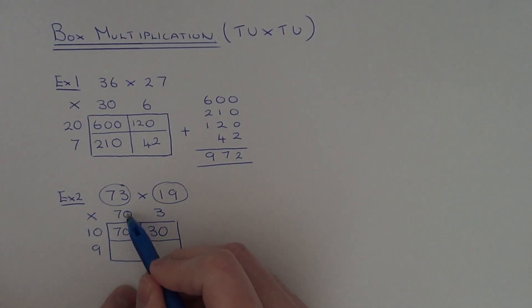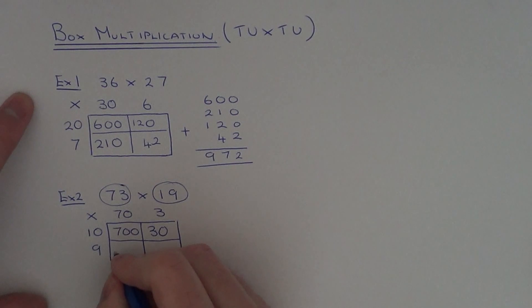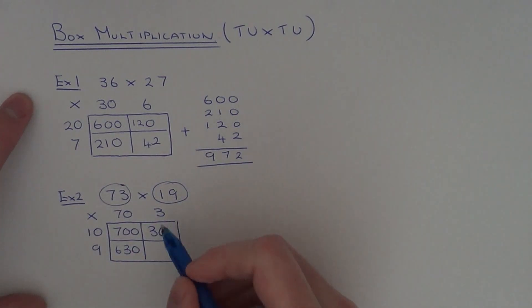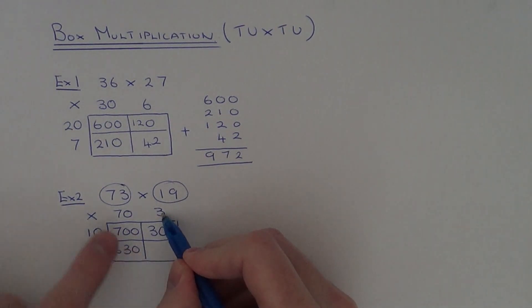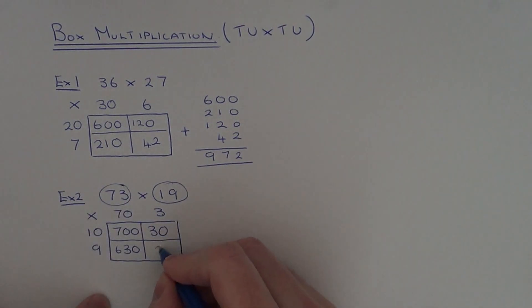So the next box here I've got 70 times 9. So again ignore your zero. 7 times 9 is 63. Plus your zero. And then you've got the final box is 3 times 9 which is 27.